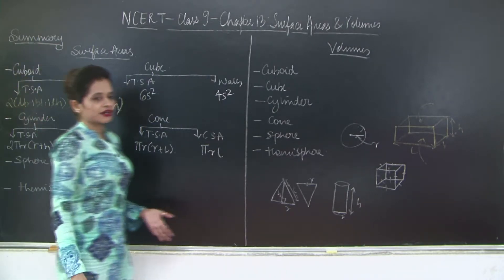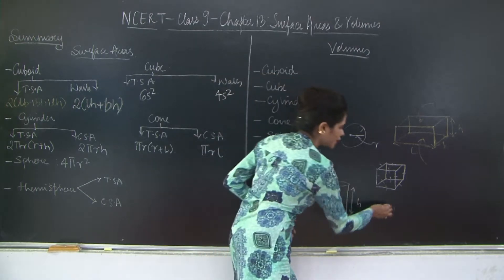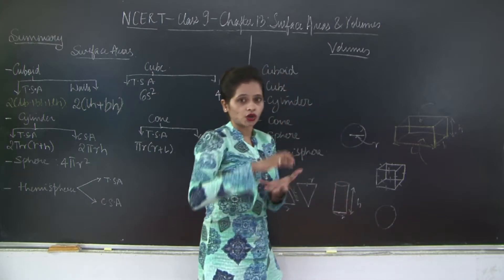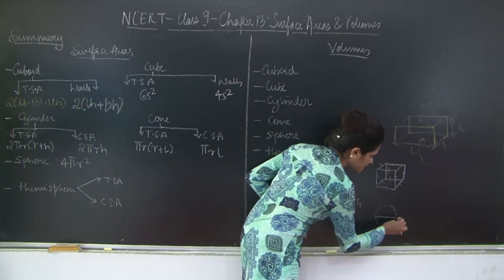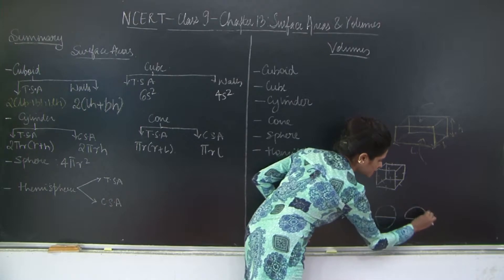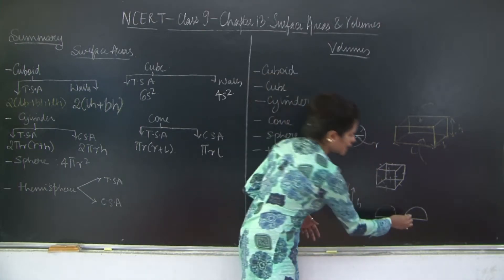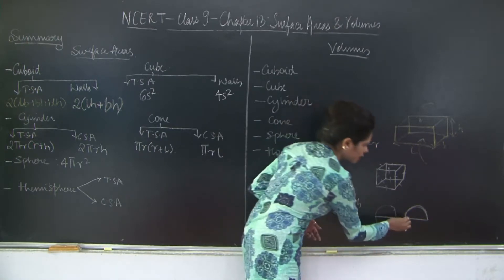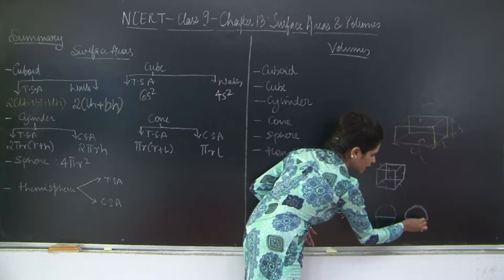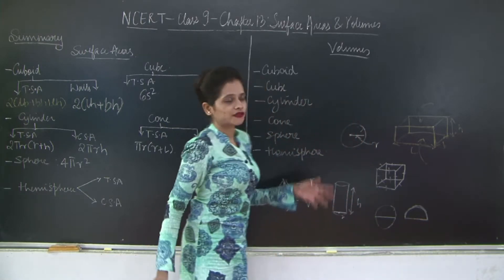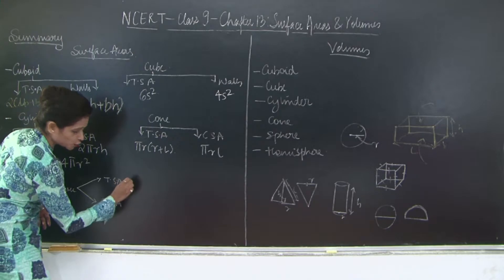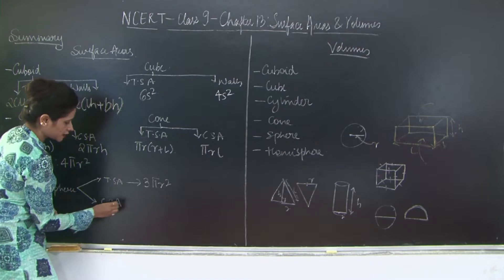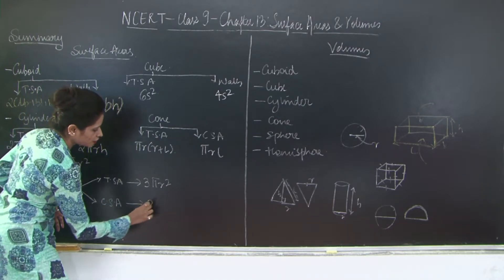A hemisphere is obtained when you cut a sphere — a solid three-dimensional ball — into half. A hemisphere has a curved surface area, which is the dome-shaped region, and a total surface area, which is the sum of the curved region and the flat circular base. The total surface area of a hemisphere is 3πR², and the curved surface area is 2πR².